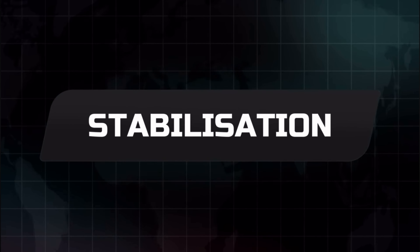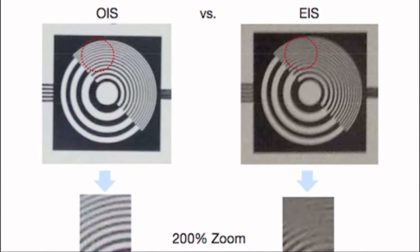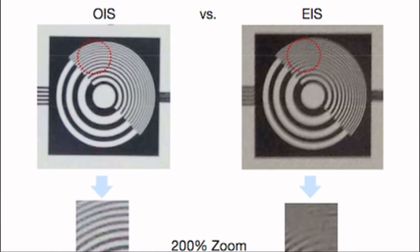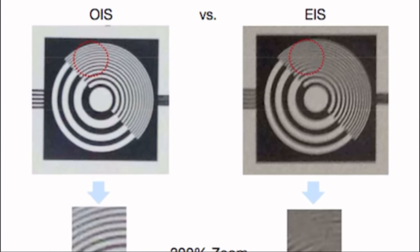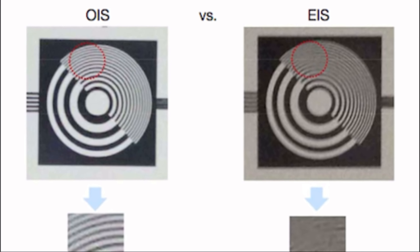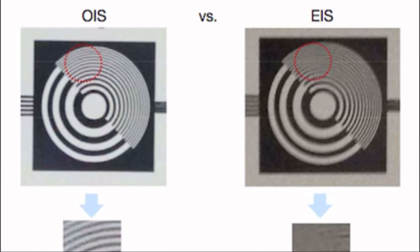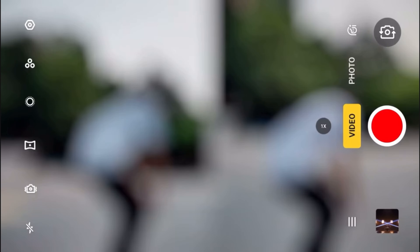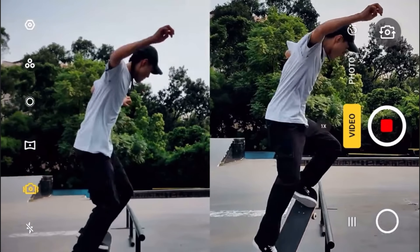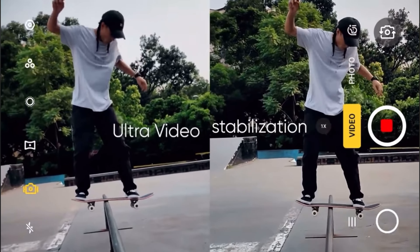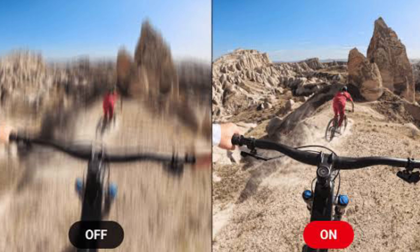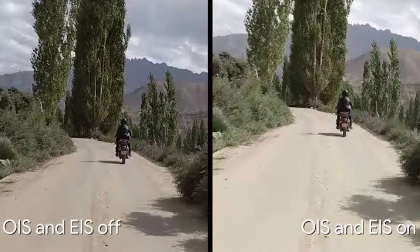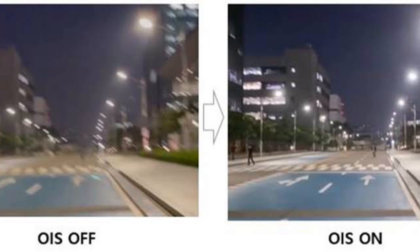Nowadays phones come with image stabilization built in — known as OIS and EIS. OIS is much better than EIS because it is hardware-based, and its major function is to prevent images and videos from being shaky or blurry, essentially stabilizing them. Previously this was only in flagship phones, but now it's available in budget phones too, so you can easily afford it and won't need a tripod. A sample image shows that with OIS on, there is a drastic difference — the image without OIS is very blurry and shaky, so OIS technology is very important in a camera phone.